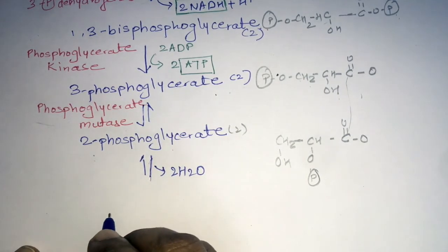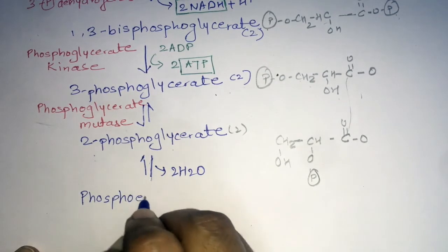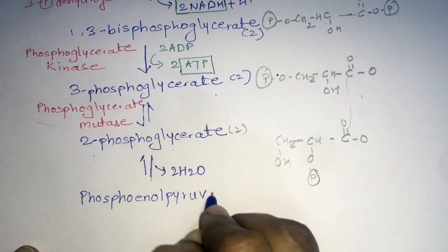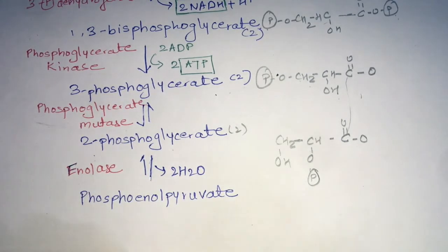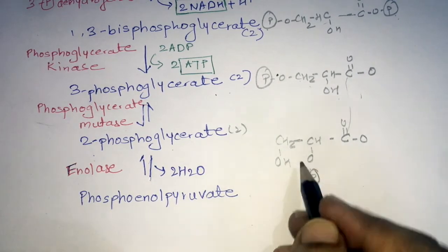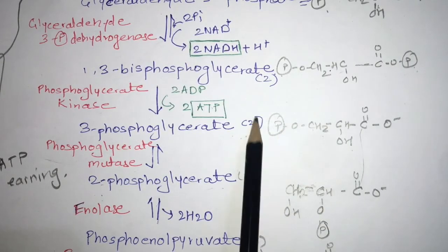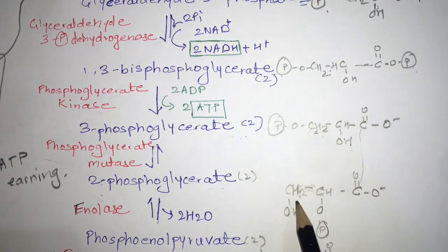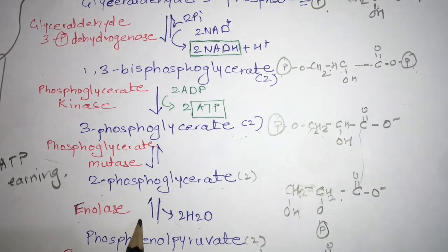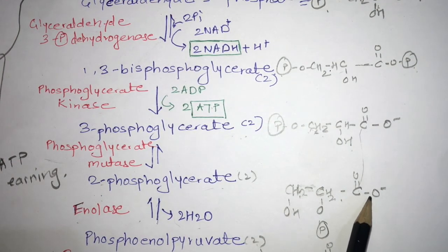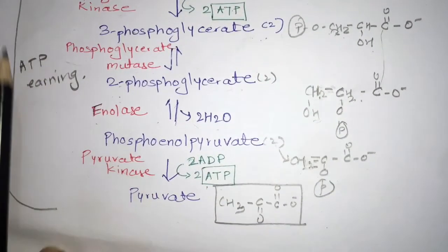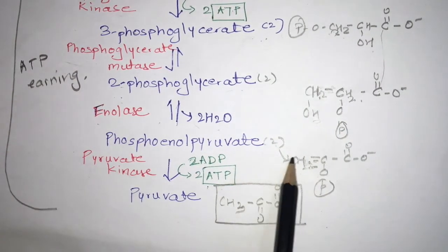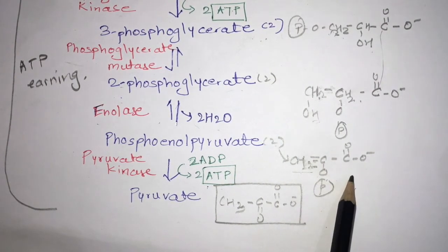Now there is a dehydration process: a water molecule is taken out from 2-phosphoglycerate, resulting in phosphoenolpyruvate (PEP). The enzyme responsible for catalysis of this reaction is enolase. Once the water molecule comes out from 2-phosphoglycerate, we get phosphoenolpyruvate. The structure of PEP is CH₂=C with a double bond, and since water has come out in a dehydration reaction, there is a double bond in it.